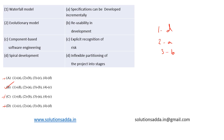The Spiral model includes four phases: planning, risk analysis, engineering, and evaluation. It has the property of explicit recognition of risk early in development. So 4 matches with D. Therefore, option B is the correct answer. The full matching is: 1-D, 2-A, 3-B, 4-D.